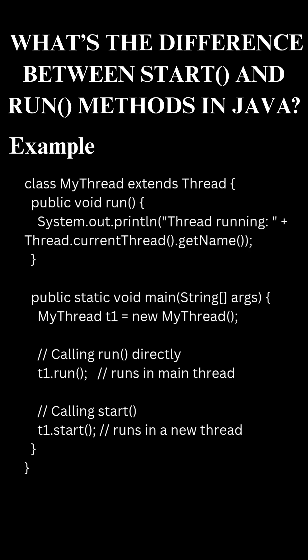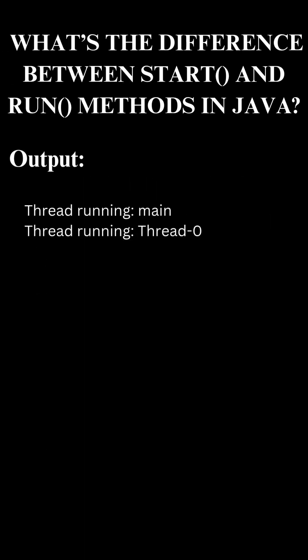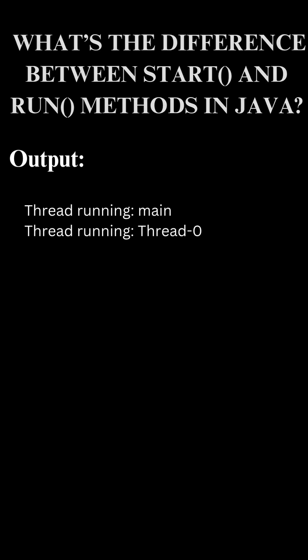Here are the key points to remember: always use the start method to begin multi-threading. Calling the run method manually just executes it like a normal method. The start method can only be called once per thread instance. Remember — the run method defines what the thread does, but the start method is what actually starts it. Always use the start method to achieve real multi-threading.